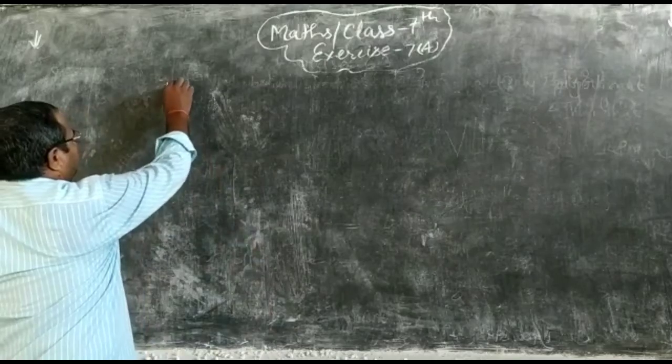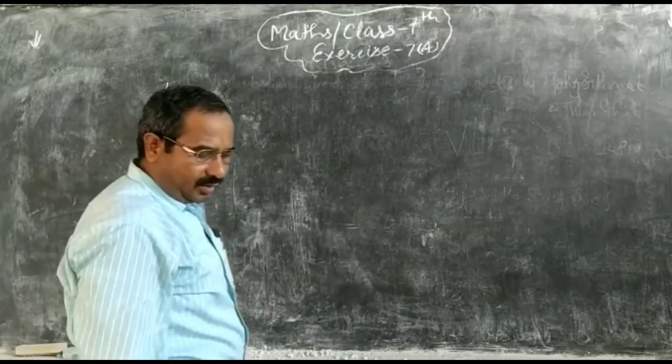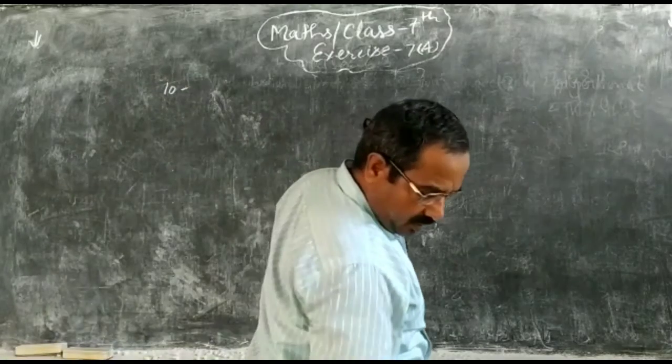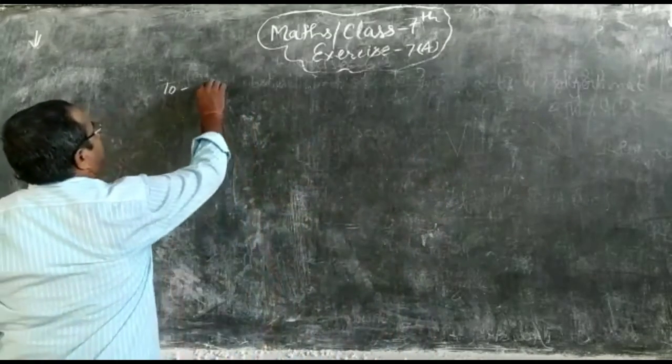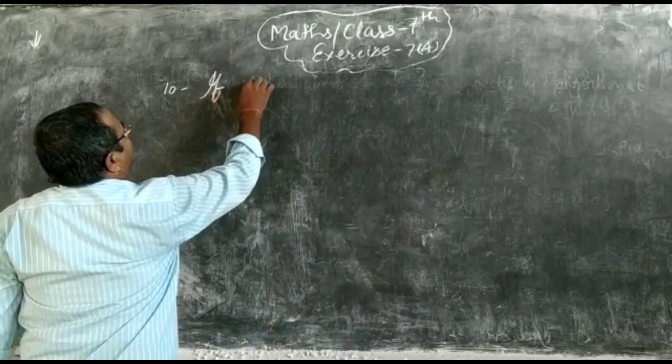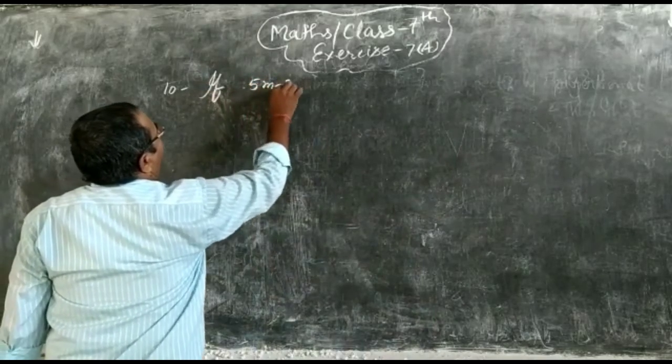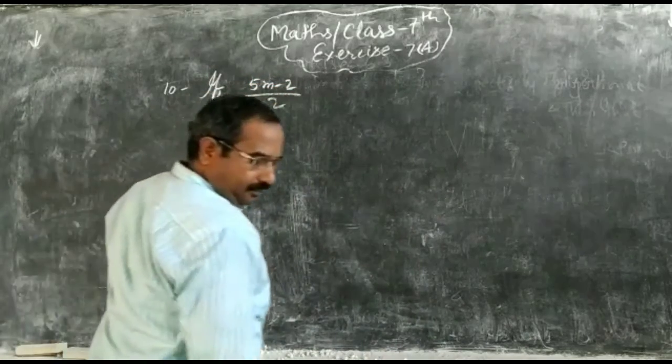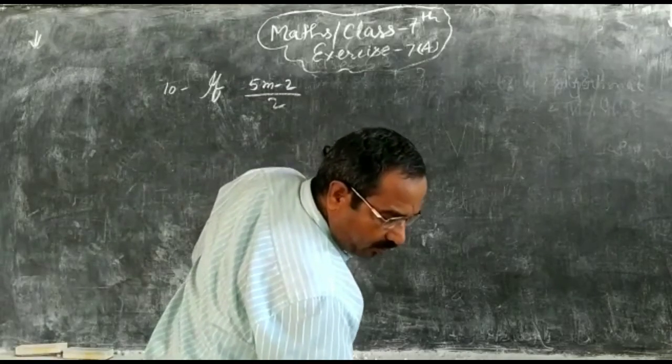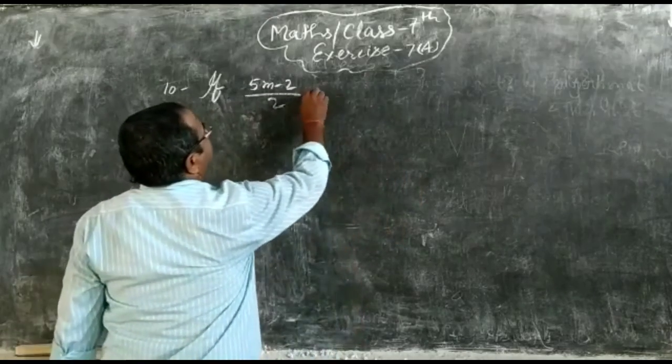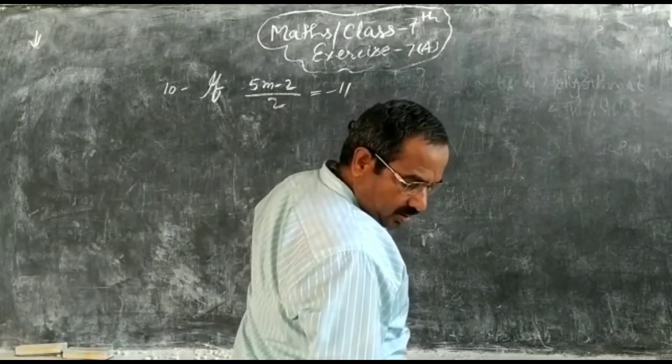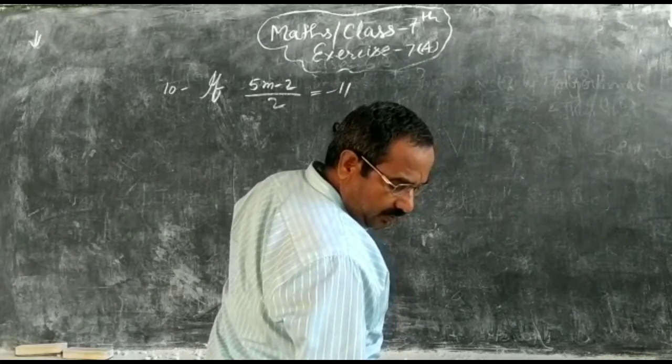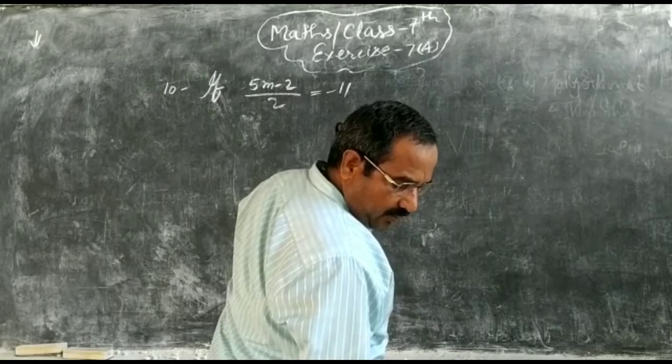See question number 10. What is there? If 5m minus 2 upon 2 is equal to minus 11, find the value of 2m plus 3.